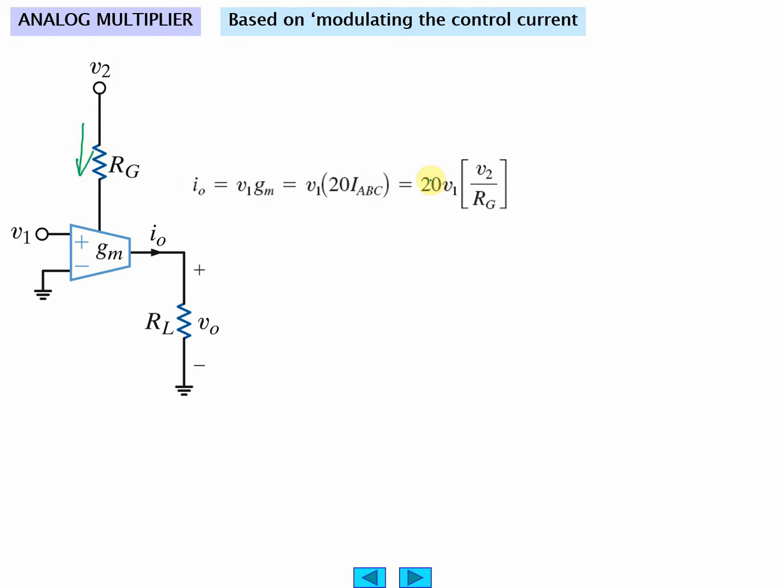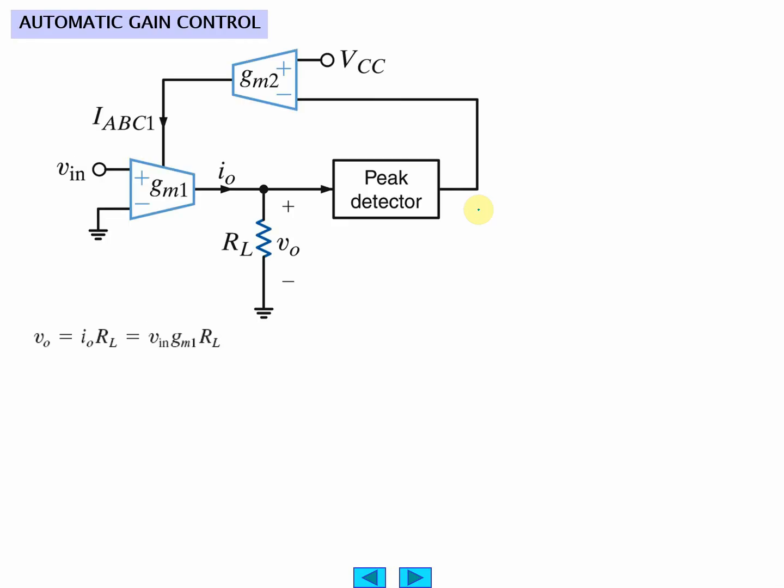Which tells you, 20 times this is going to tell us the gain. So now we got a V1 times V2 factor, a multiplier. I'm going to go on to the next circuit next time, next video.